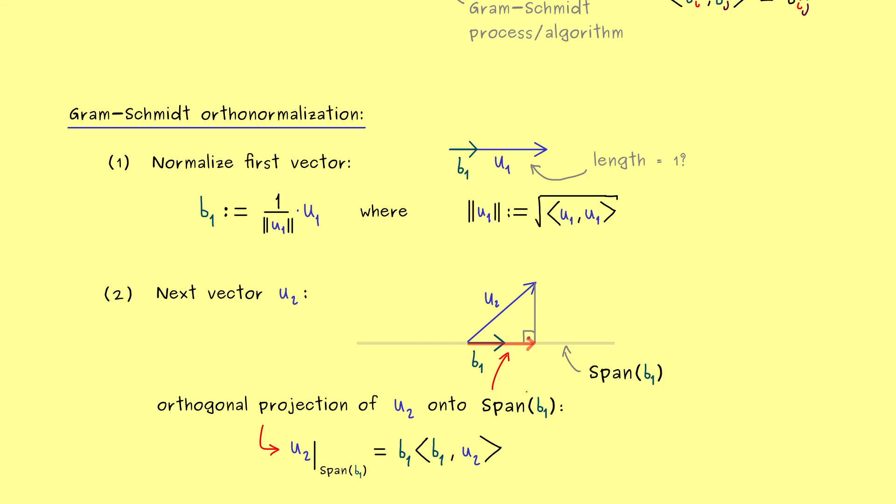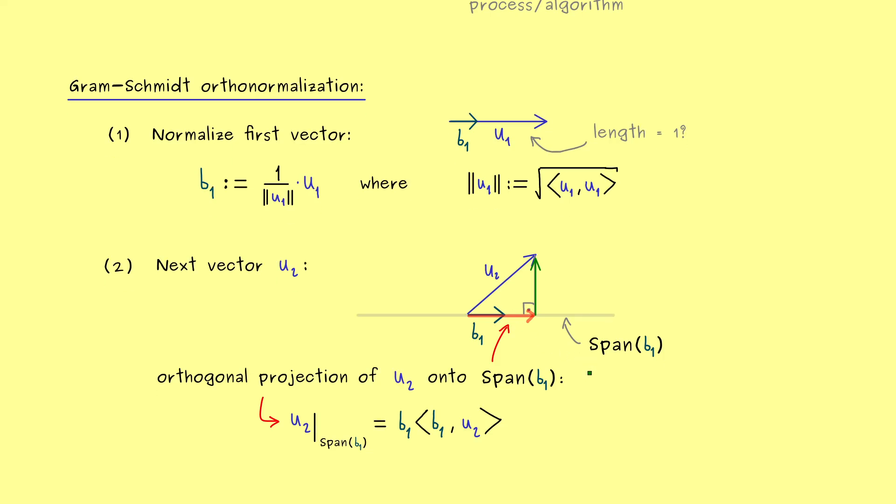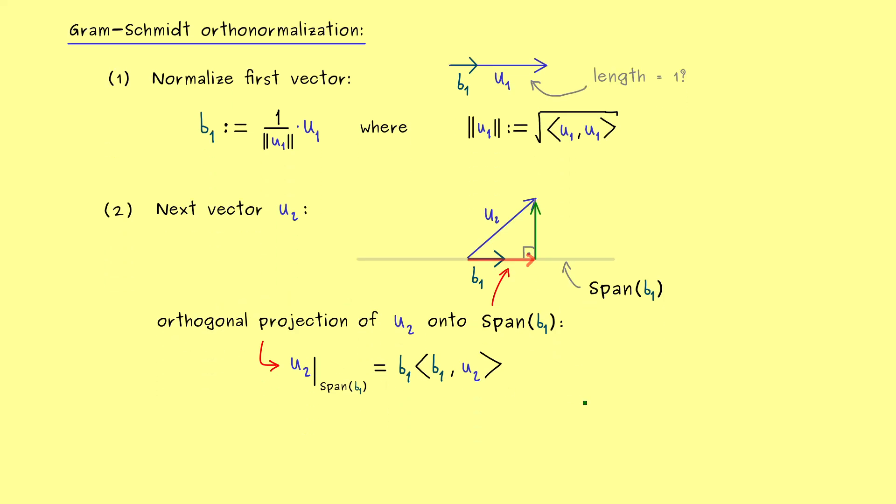However, we don't want this component of u₂. We want the one that is orthogonal to the subspace. So actually we want to have the normal component of the orthogonal projection. And this is really simple, because it's just u₂ minus the orthogonal projection. Hence our vector b₂ we want to have is given by this difference here.